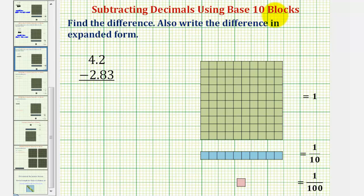We want to perform the subtraction using base ten blocks, then also write the difference in expanded form. We have 4.2 minus 2.83. Because we're working with decimals, we'll define one flat as one whole, one long as one tenth, and one bit as one hundredth.